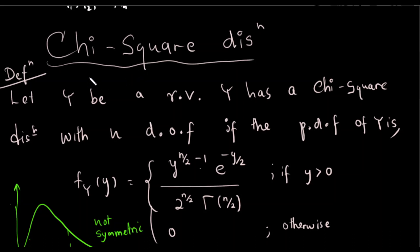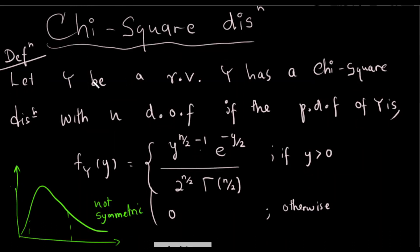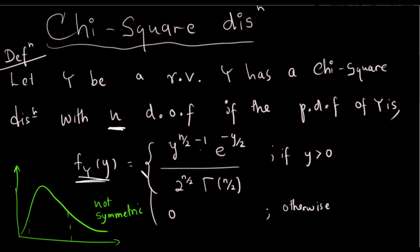Let y be a random variable, and y has a chi-square distribution with n degrees of freedom. If the probability density function of y is f(y) equals a given expression, we can use it in the chi-square table.